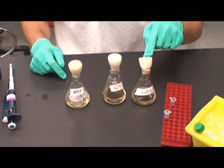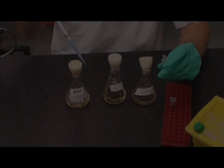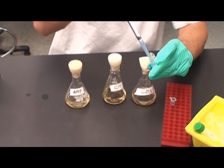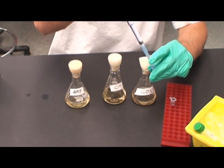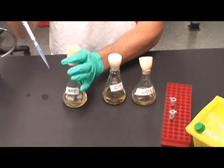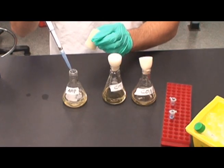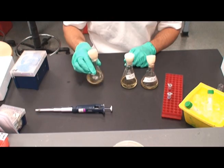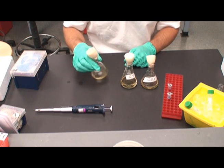Water will be added to the control flask to keep the volume the same. As shown here, 1 milliliter of ampicillin is aseptically added to the amp flask and 1 milliliter of chloramphenicol is added to the CM flask. The flasks are swirled to mix and then returned to the shaker.